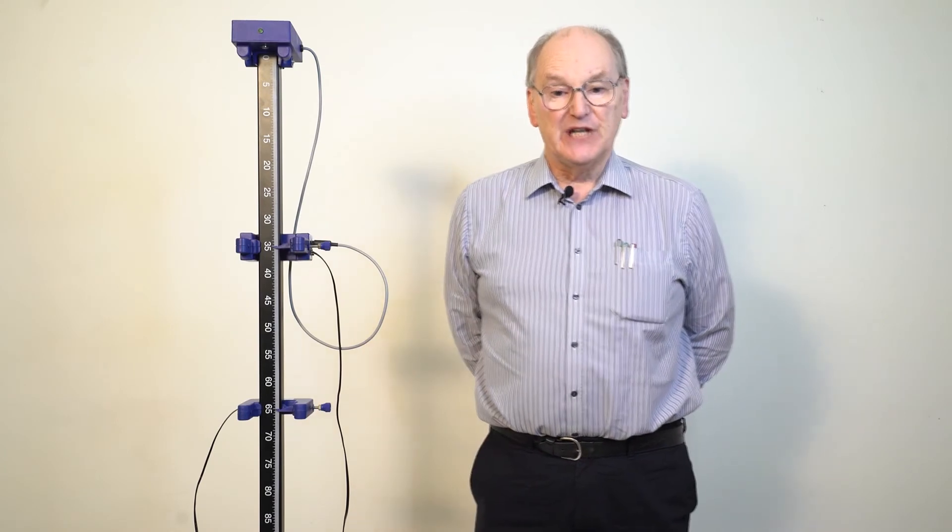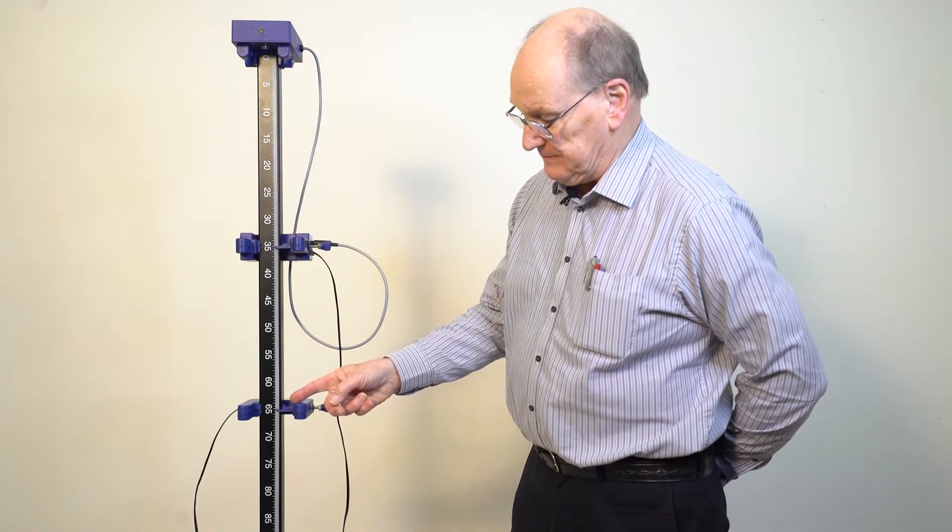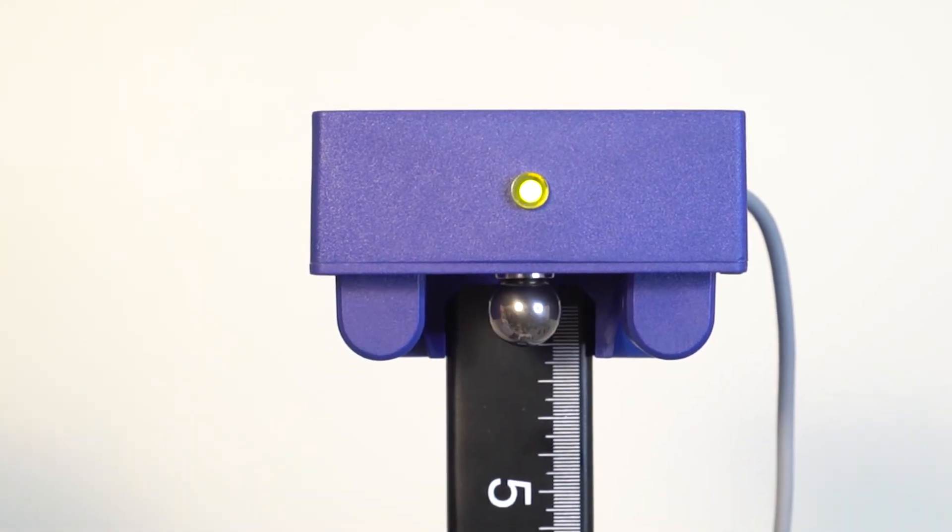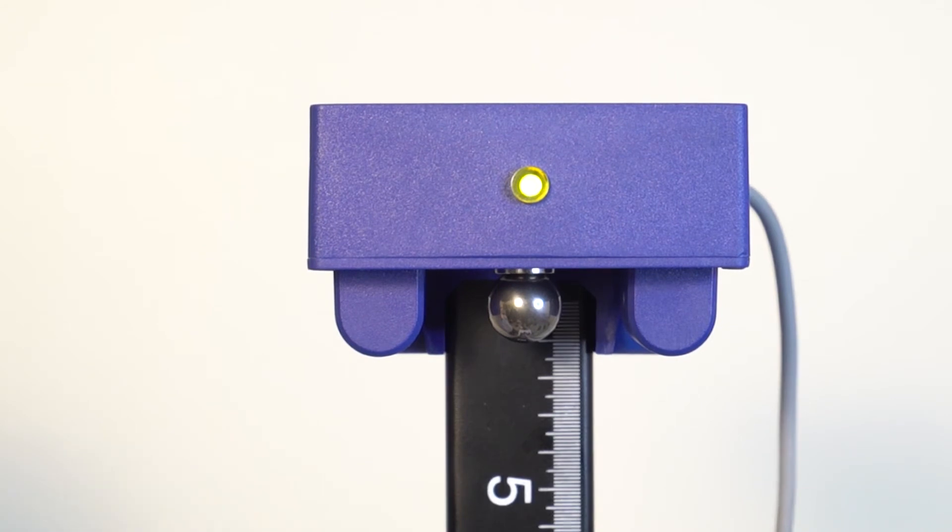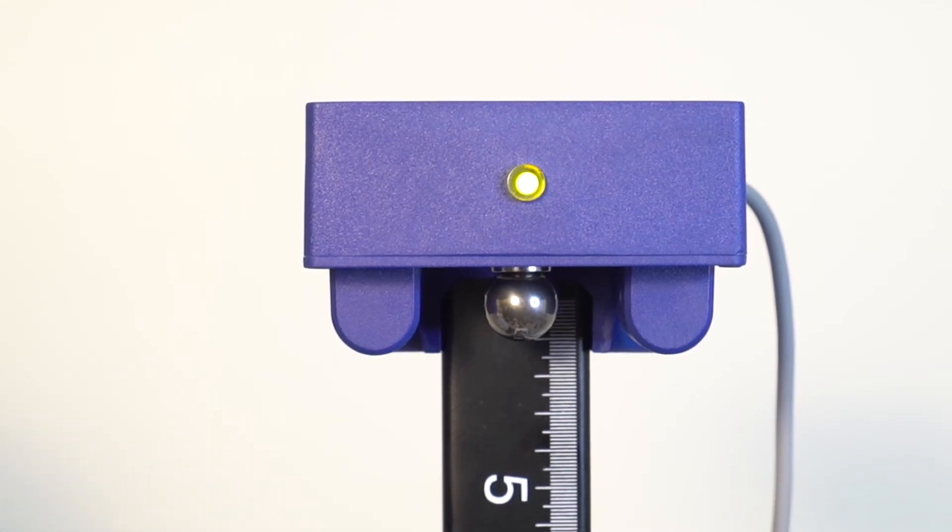The positions of the light gates are entered in the Timing Pro software. The ball is attached to the solenoid and the indicator LED turns on. The solenoid only draws power when the ball or dowel is attached.